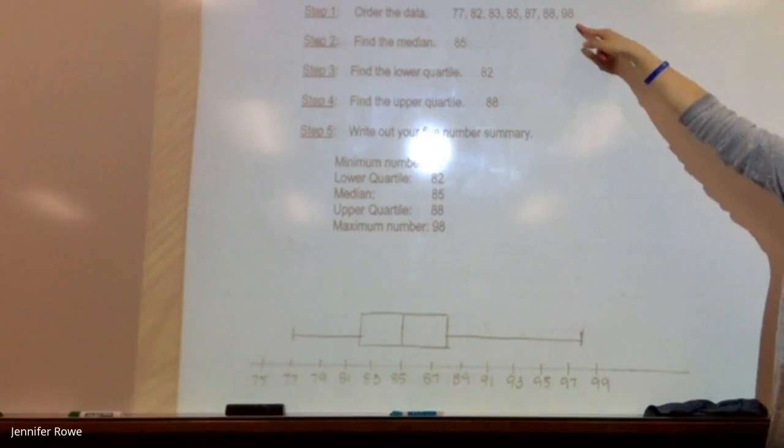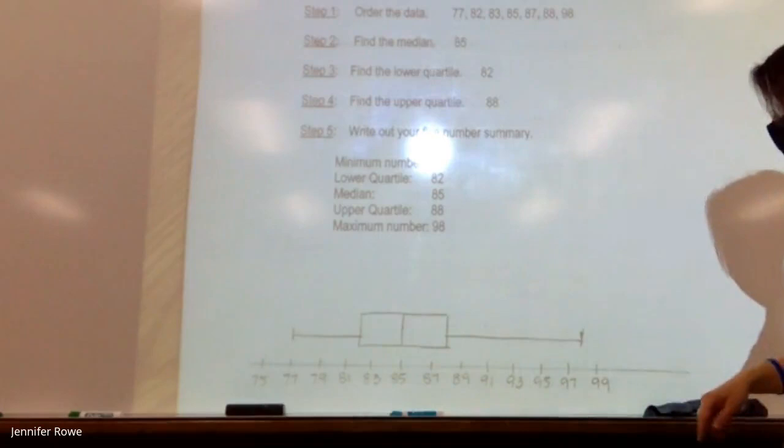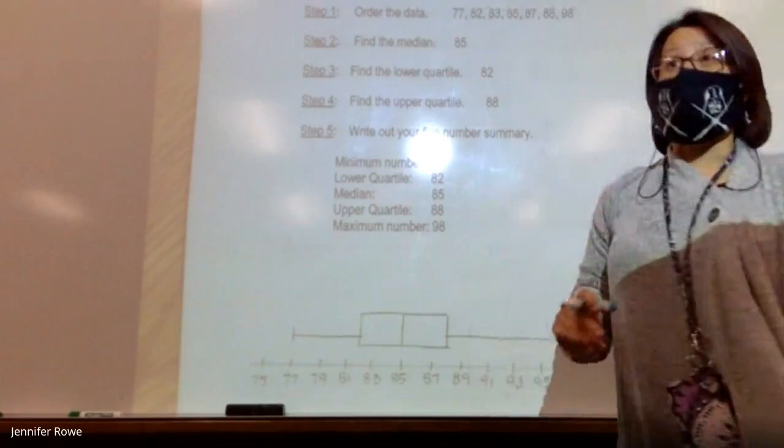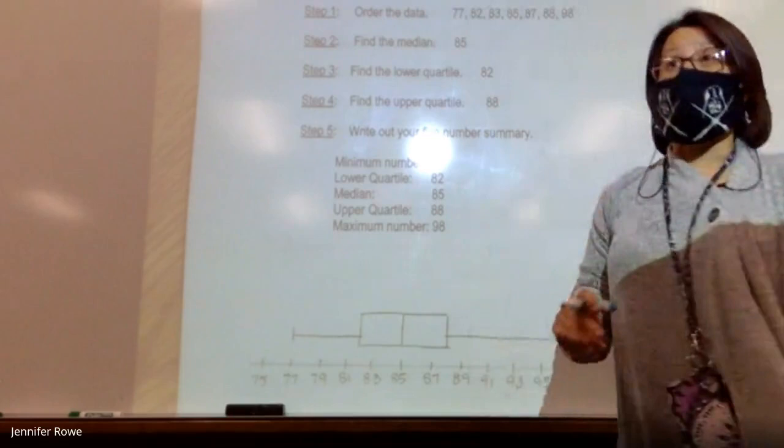Step two is to find a median. The way I find the median is I go low, high, low, high, low, high. There's the median. Yes, dear. What are your even numbers? We're going to do it. Okay? So my median is 85. Good? Okay.